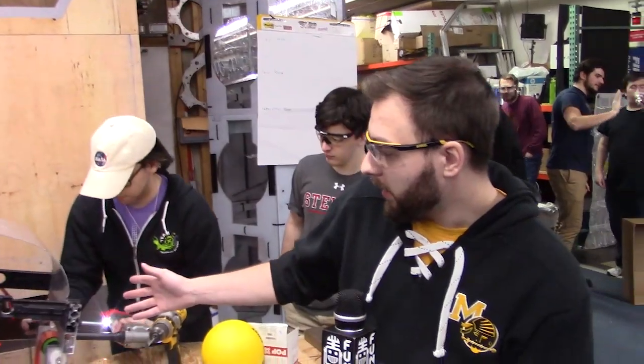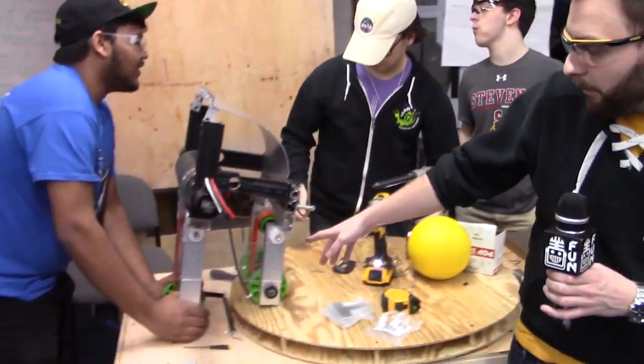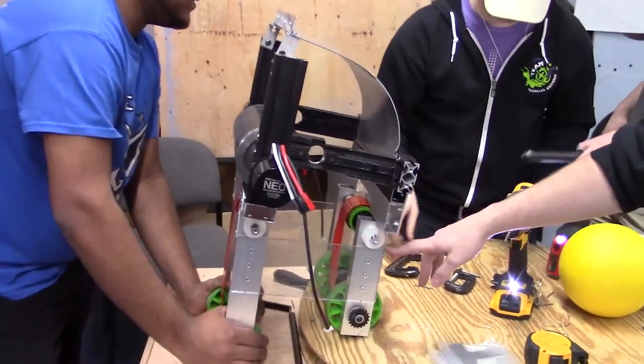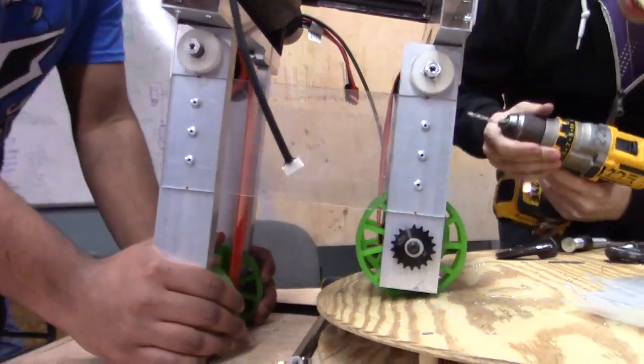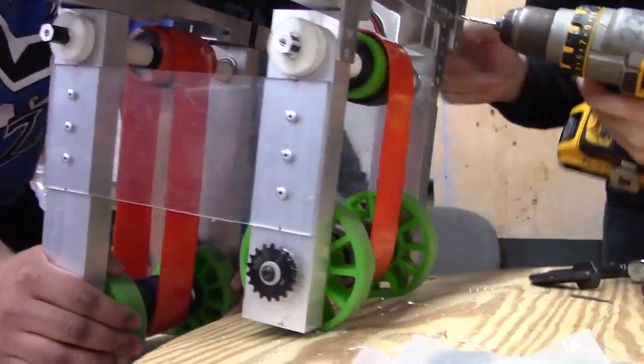Hi, I'm Eric Drost, mentor for FRC 1923, and today I'm here with FIRST Capital RI3D. What we're doing here is integrating the top part of our belting system that moves the balls from the intake all the way up to the shooter.